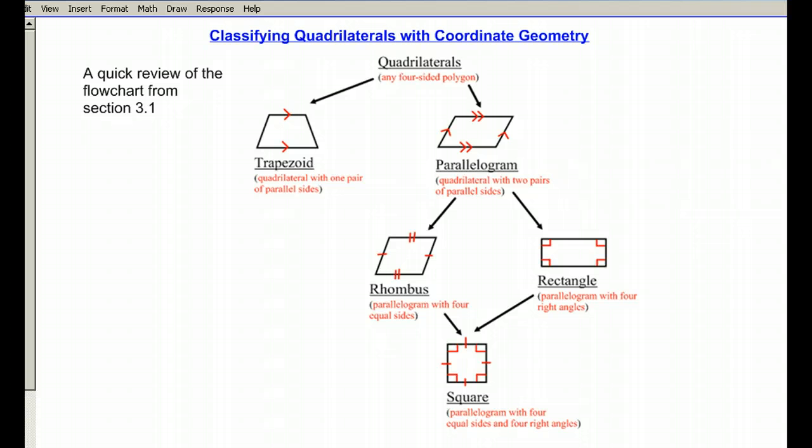As a quick review of the flow chart that was back in section 3.1 about quadrilaterals, quadrilateral just means any four-sided polygon. Trapezoids have one pair only of parallel sides. Parallelograms have two pairs of parallel sides.